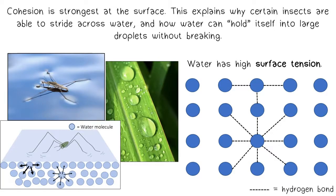Cohesion is strongest at the surface. This explains why certain insects are able to stride across water, and how water can hold itself into large droplets without breaking.